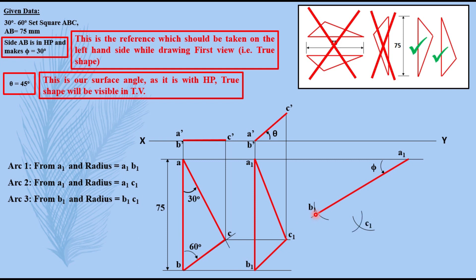Then take the projectors up and from the front view obtain the intersection points. Here you will get A1 dash, here you will get B1 dash, and here C1 dash. Join them in sequence and this completes your last final front view.